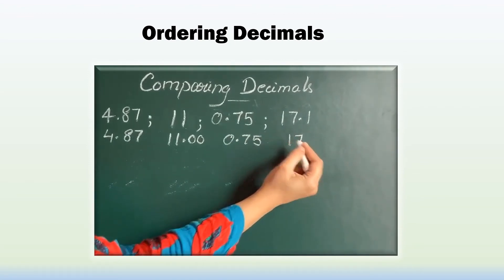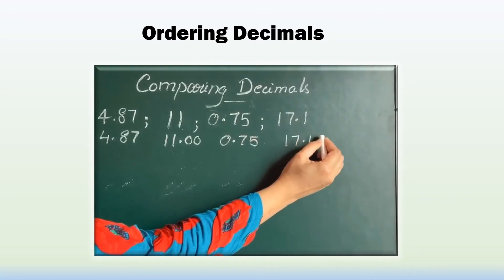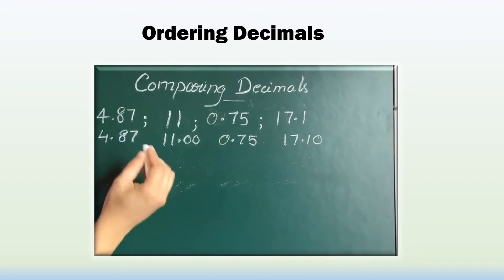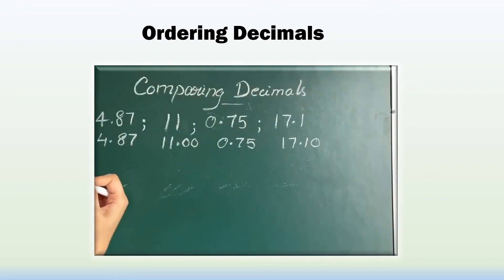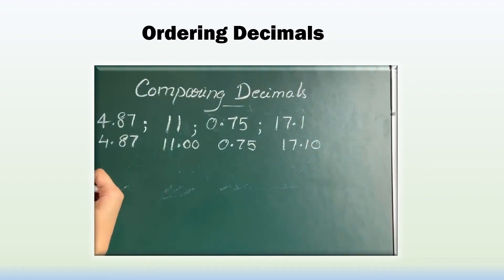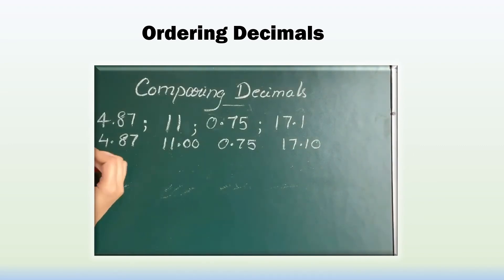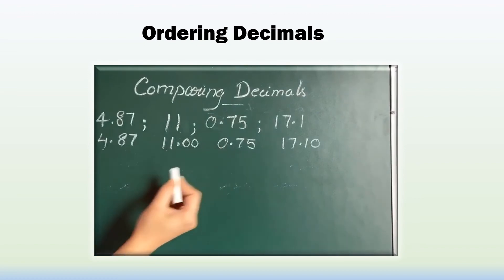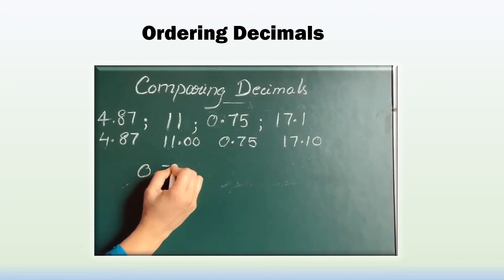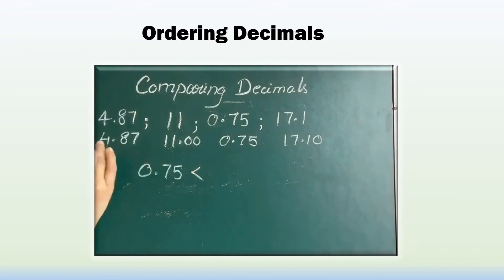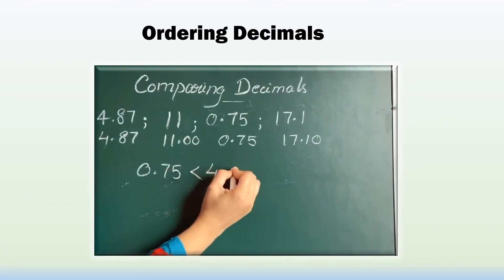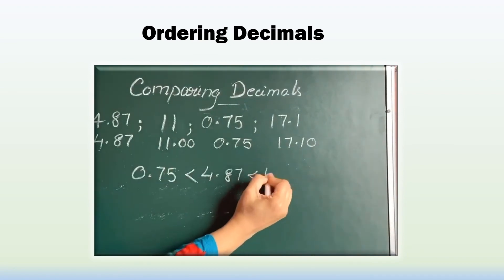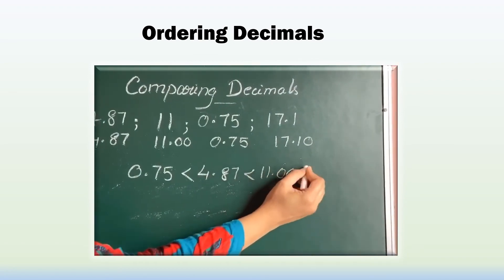Now all 4 numbers have been changed to like decimals. Let's compare and arrange from smallest to biggest. First, compare the whole number part: we have 4, 11, 0, and 17. The smallest whole number is 0, so 0.75 comes first, then 4, then 11, then 17.